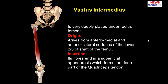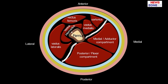Vastus intermedius is the deeply placed muscle just behind the rectus femoris. Its origin is from the anteromedial and anterolateral surface of the lower two-thirds of the shaft of the femur. It is inserted into the superficial aponeurosis which forms the deep part of the quadriceps tendon, ultimately going to the patella.